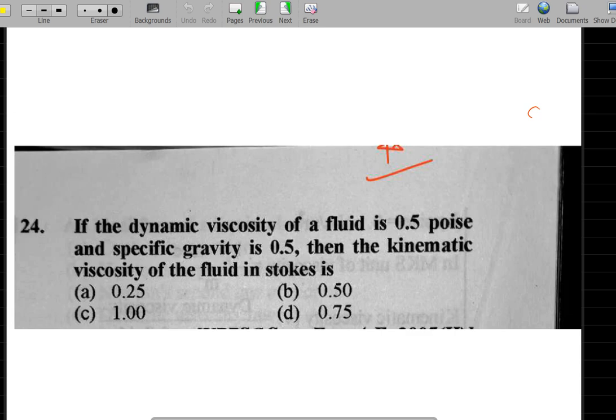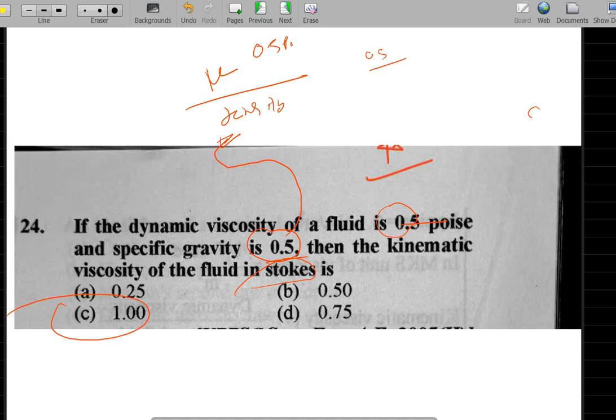Question 24: dynamic viscosity of fluid is 0.5 poise or specific gravity is 0.5. The kinematic viscosity formula is dynamic viscosity mu divided by density. We have to convert 0.5 in terms of density. Dynamic viscosity is in poise. When we do unit conversion to stokes, ultimately 0.5 and 0.5 cancel out, so the answer is one. That is also an important question: you should know what one stoke means in centimeter square per second or meter square per second. Please comment in the section about one stoke in meter square per second.